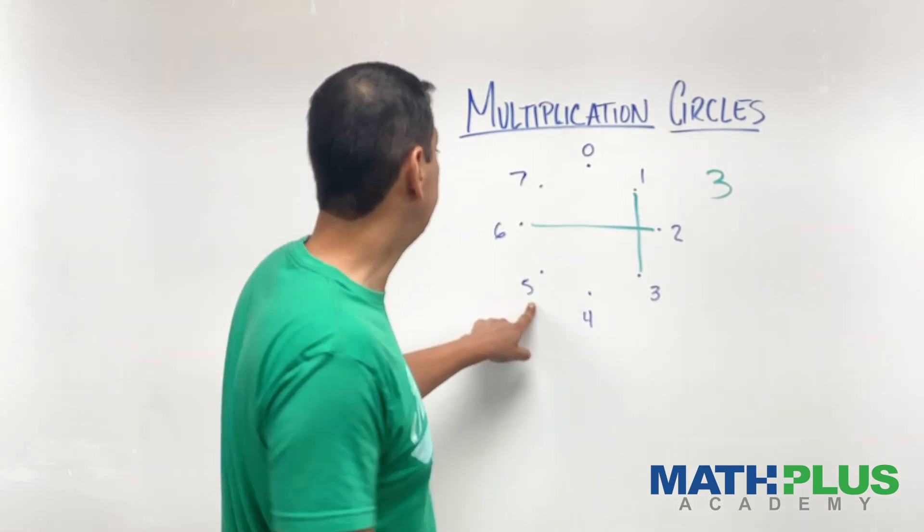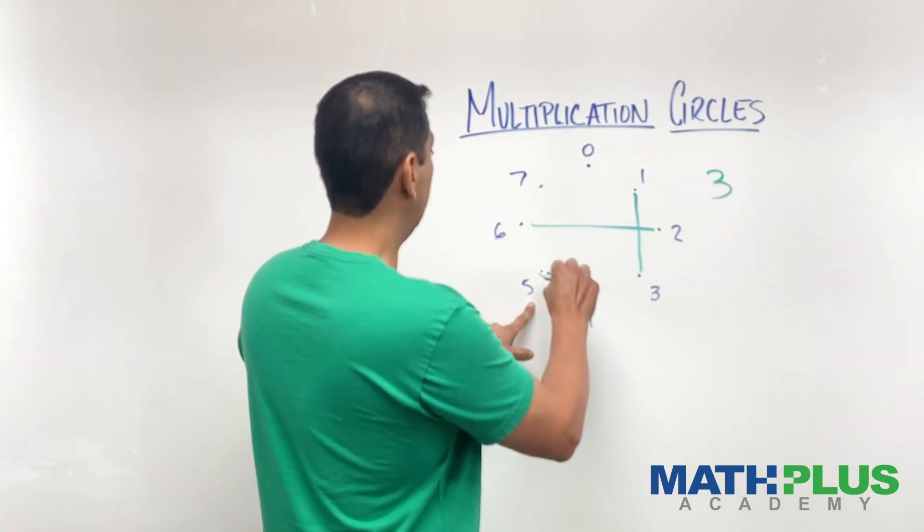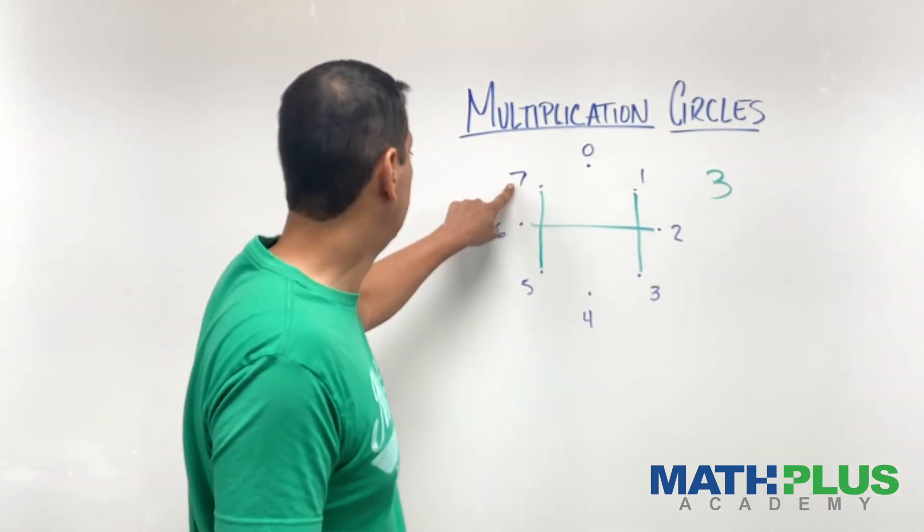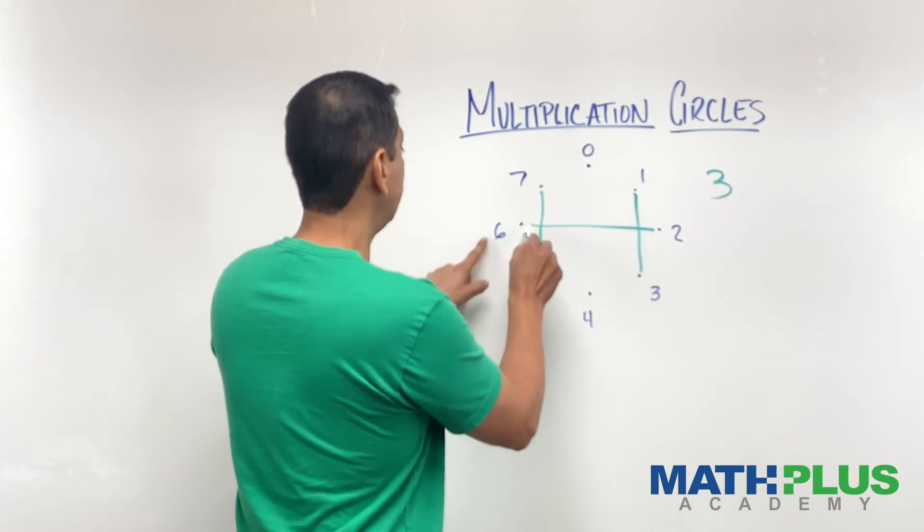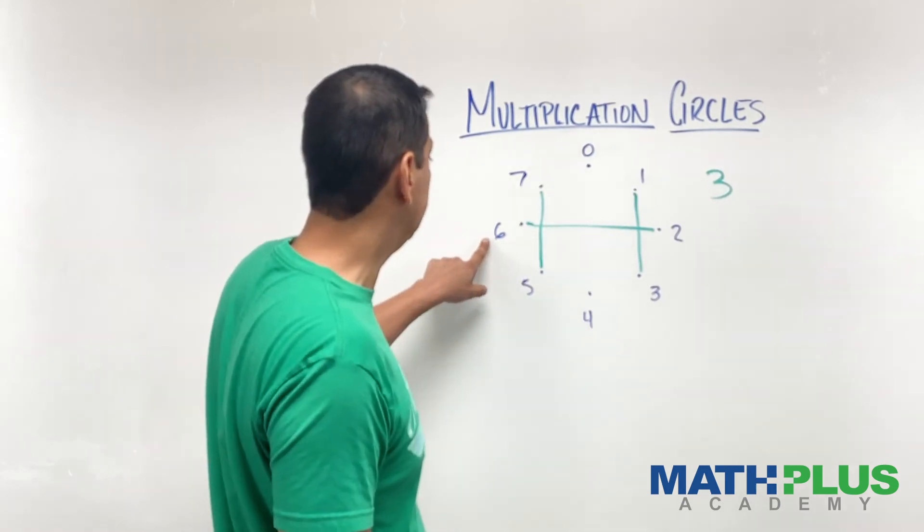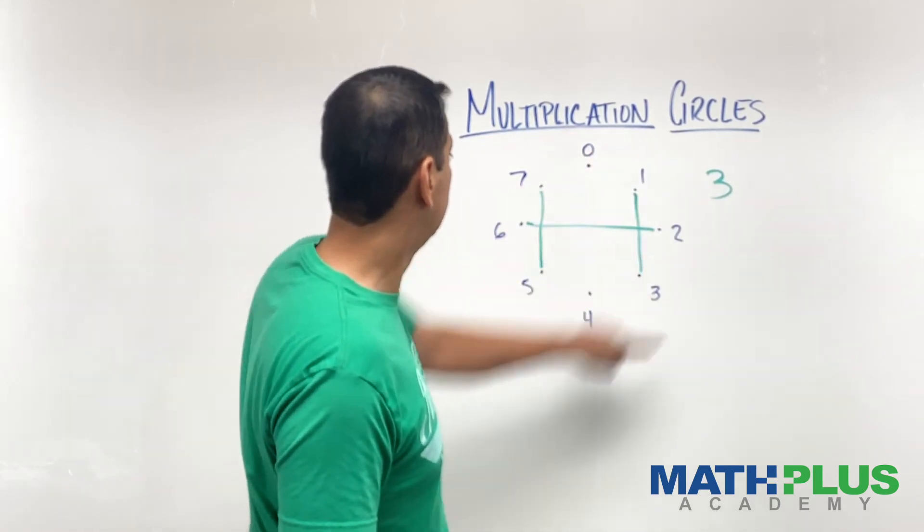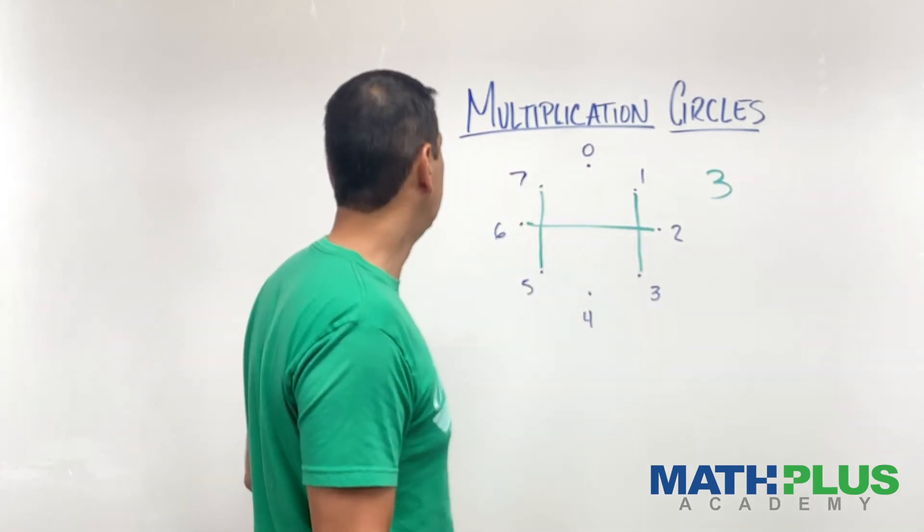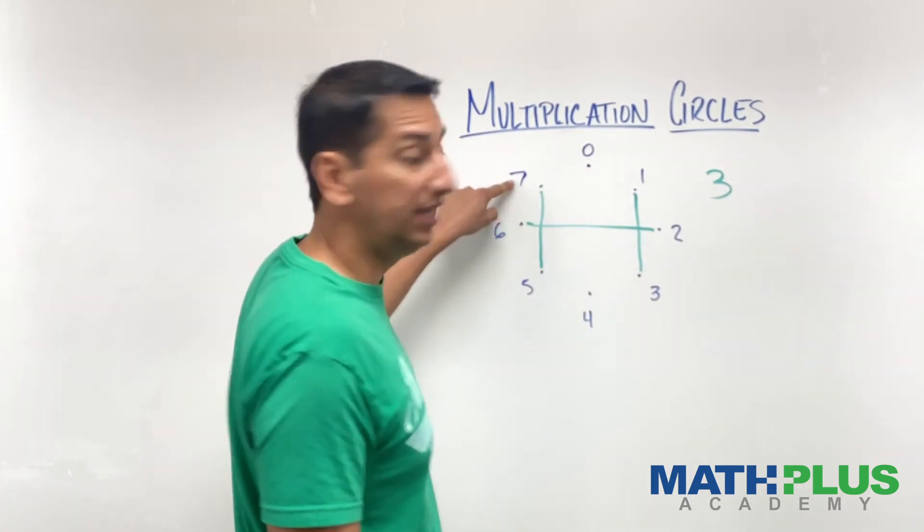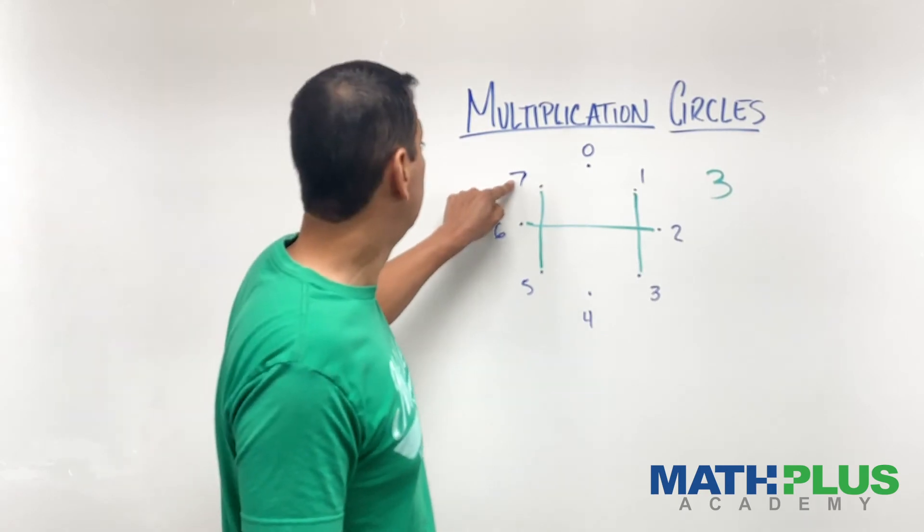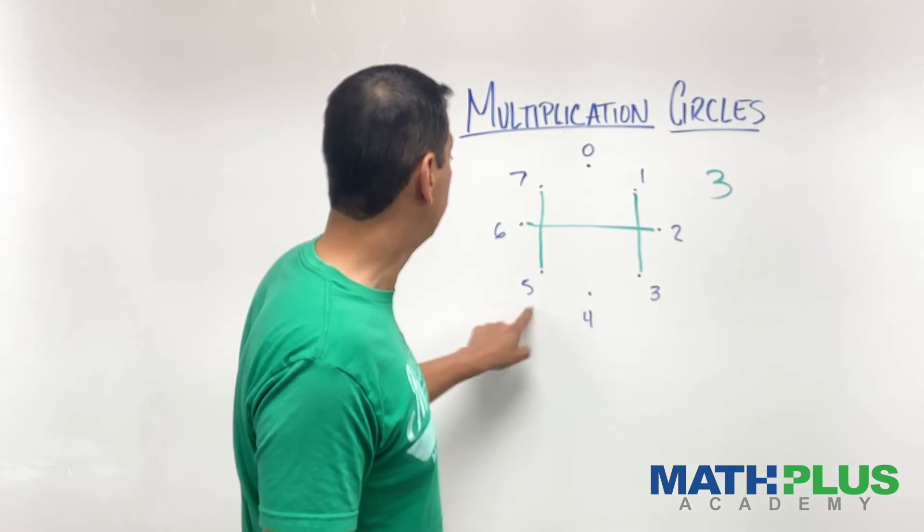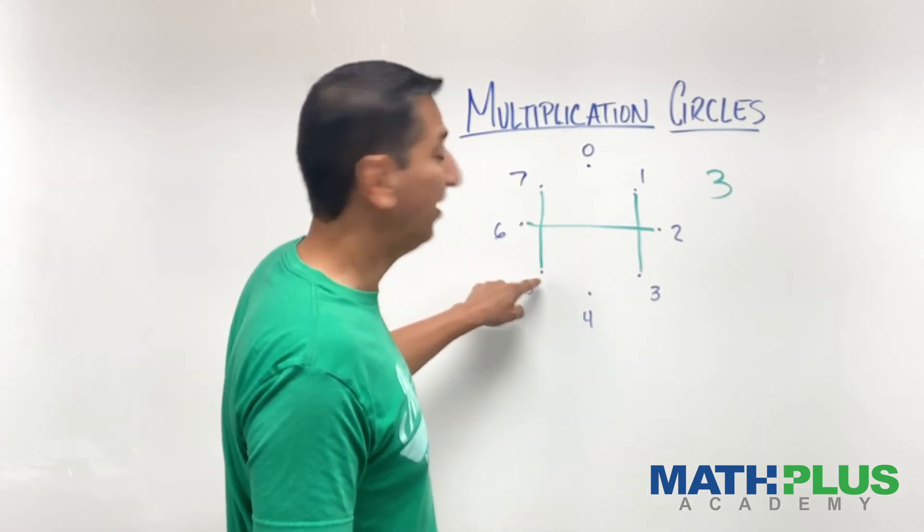Five times three is 15. I believe that would also be seven because seven plus eight is 15. And six times three is 18. So it's eight, 16, 17, 18. That's that line. Again, seven times three is 21. And this is eight, 16, 17, 18, 19, 20, 21. So that's this line. Repeat again.